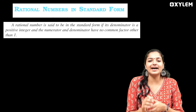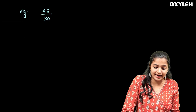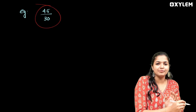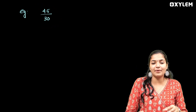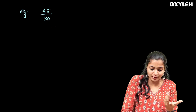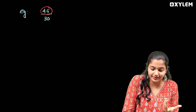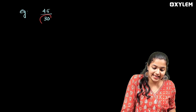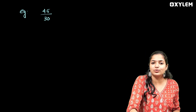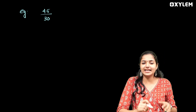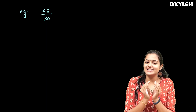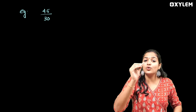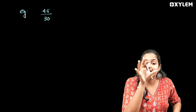Okay, ready? Let's try this one. We have 45 by 30. 45 is the numerator and 30 is the denominator. We need to identify the numerator and denominator in these two terms.